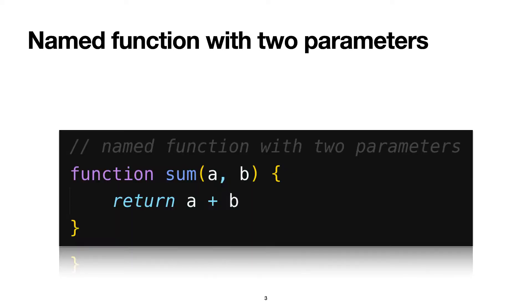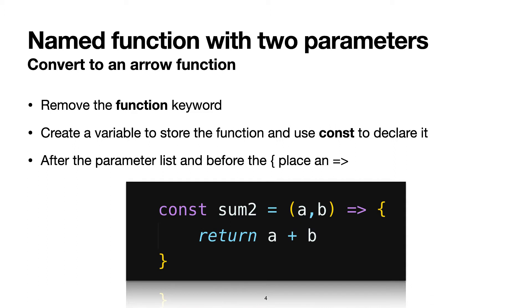So, named function with two parameters — you know this. Here's a function with the name of sum that takes two parameters, a and b, and returns the sum of a plus b. Pretty simple. Now, the first thing you want to do when converting a function to an arrow function — and arrow functions are a newer way to write traditional functions in JavaScript — is remove the function keyword.